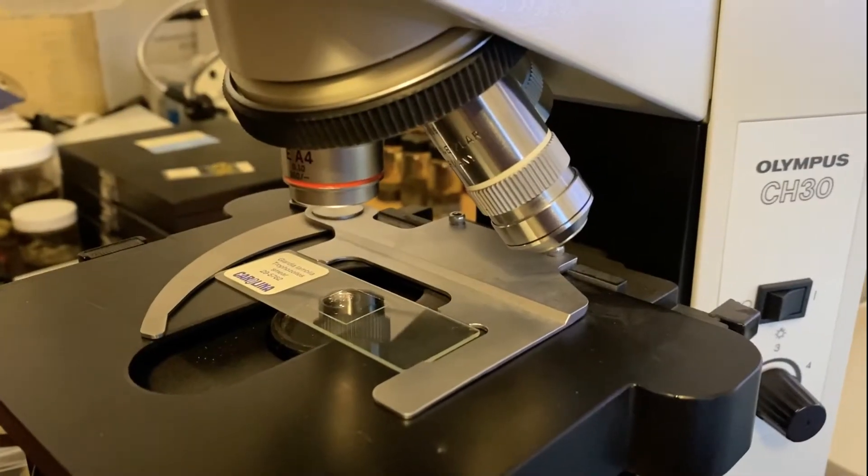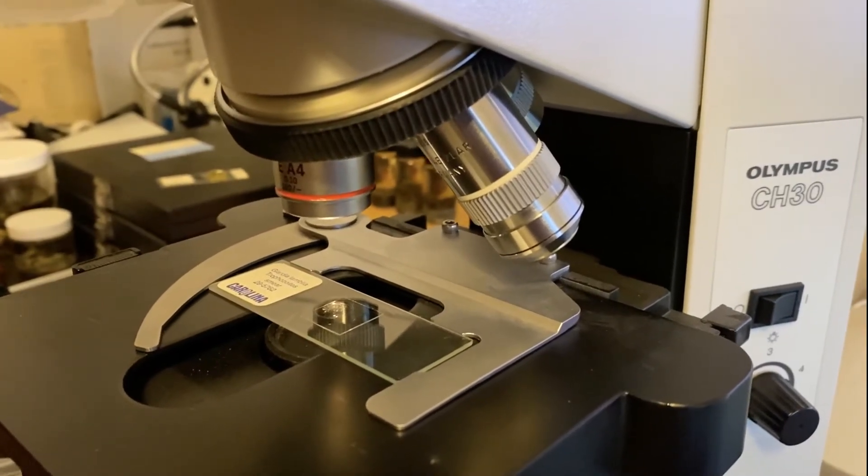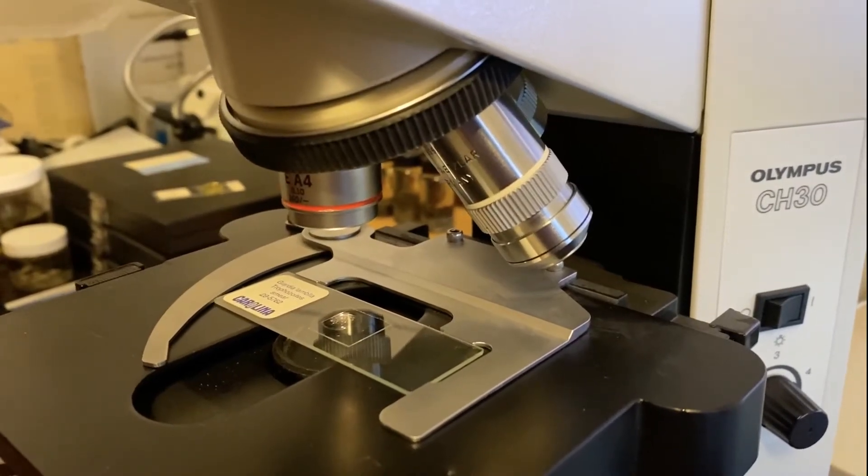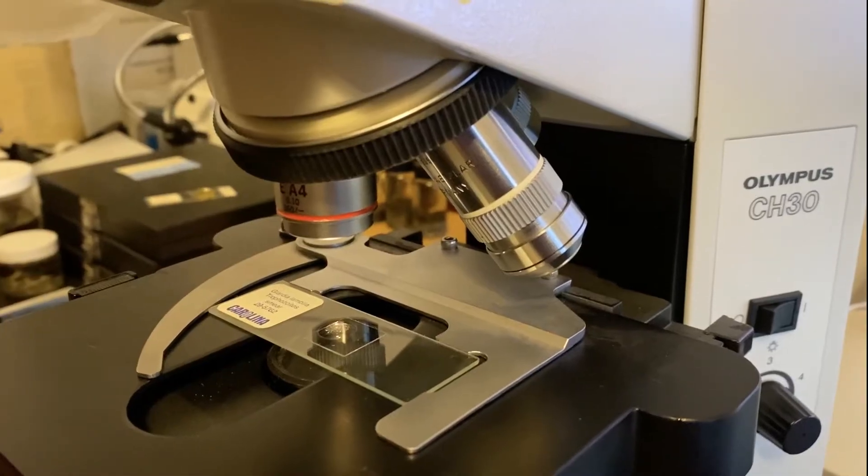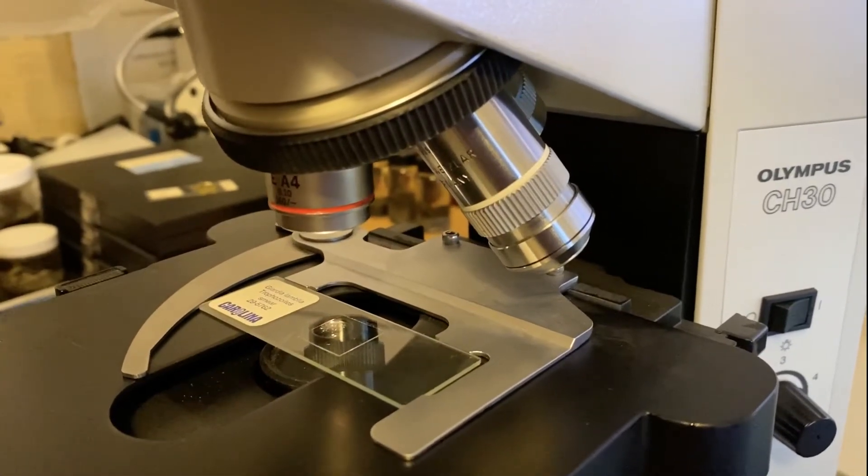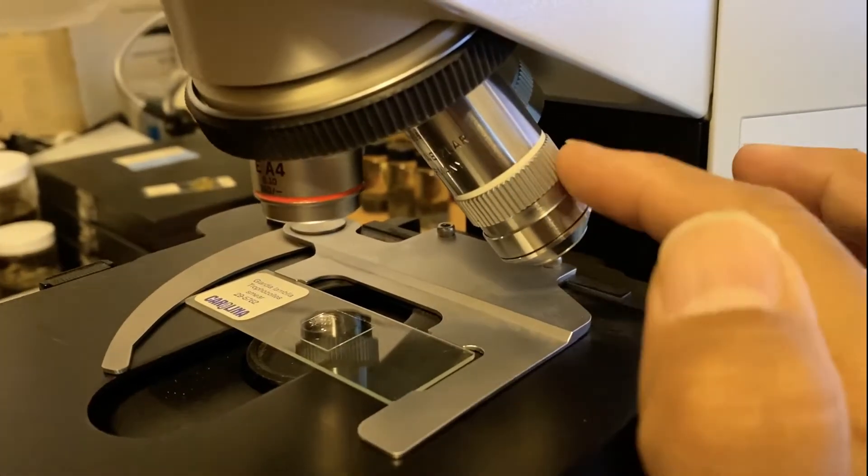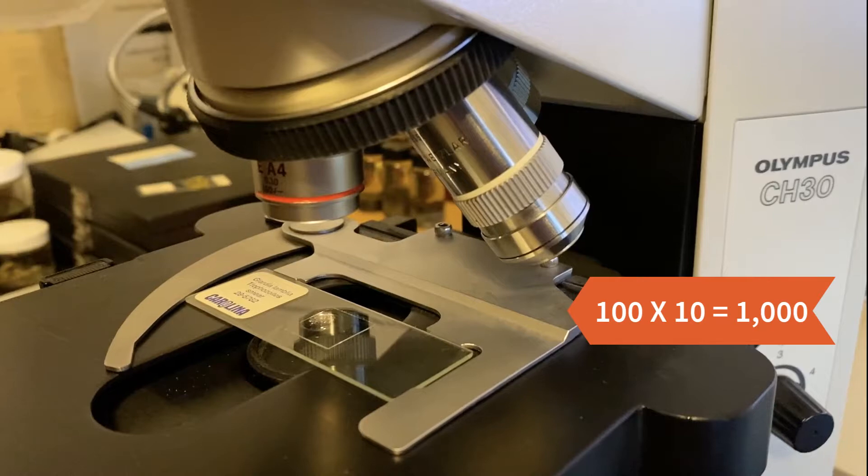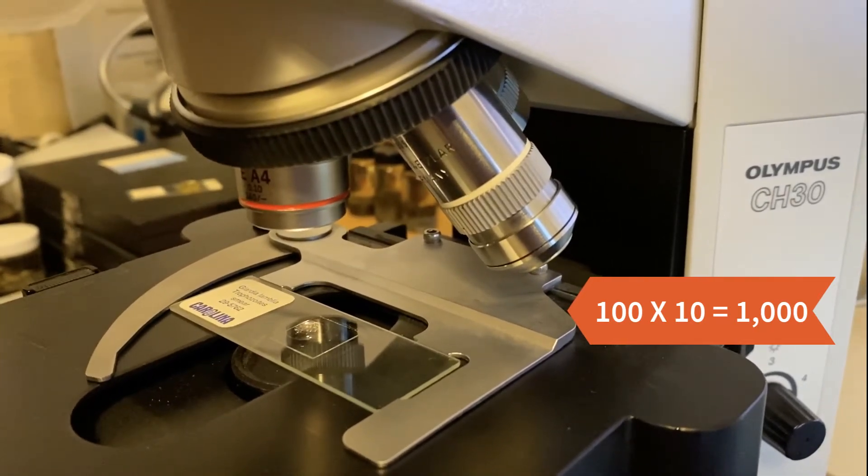In this video, I'm going to be showing you how to properly use oil immersion. I'm going to start with a slide that requires oil immersion. This is a slide of Giardia. Giardia is incredibly small, so you have to use the highest magnification here. The highest objective lens we have is this one right here that's 100 times magnification. When you add it to the eyepiece, which is 10 times magnification, that makes a 1000 times magnification image.